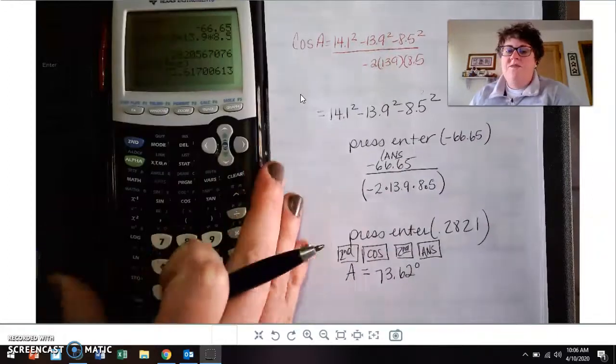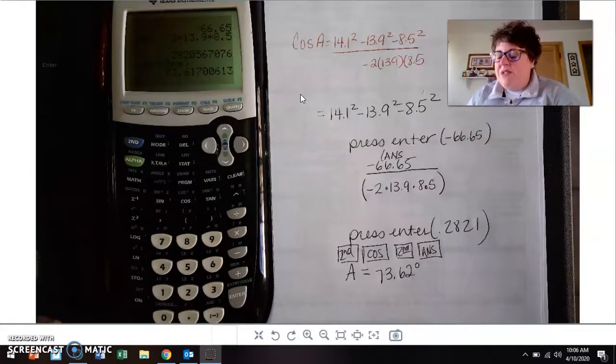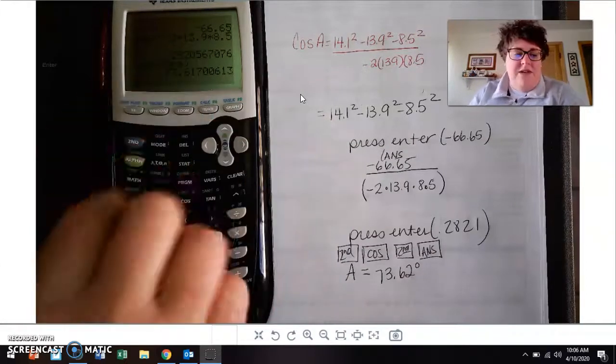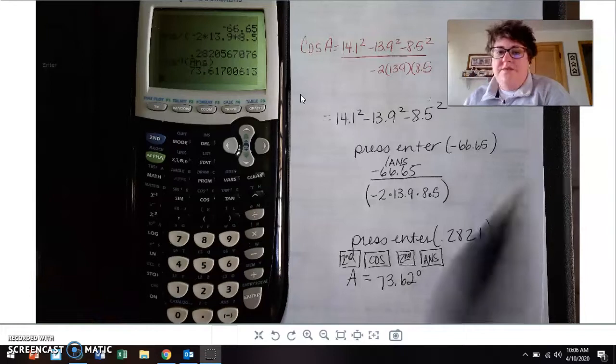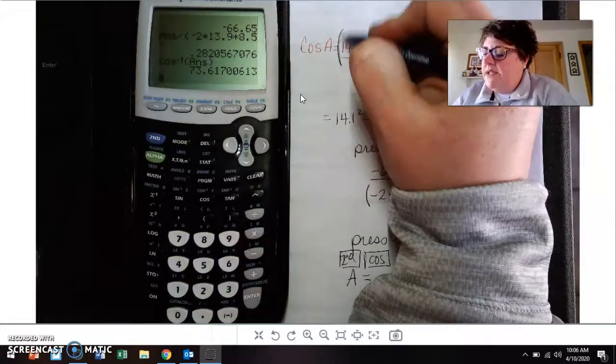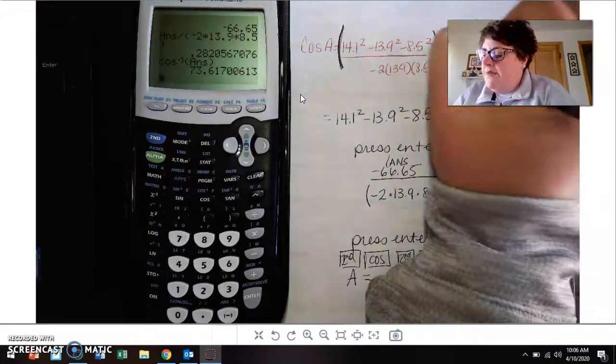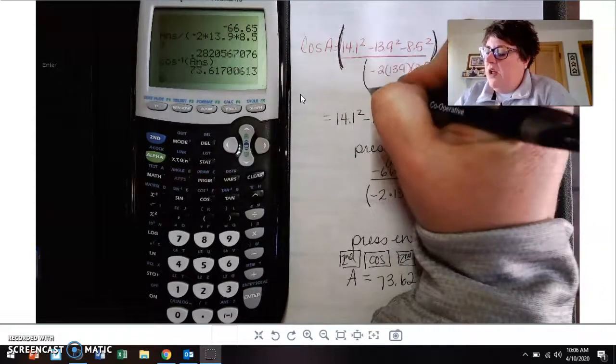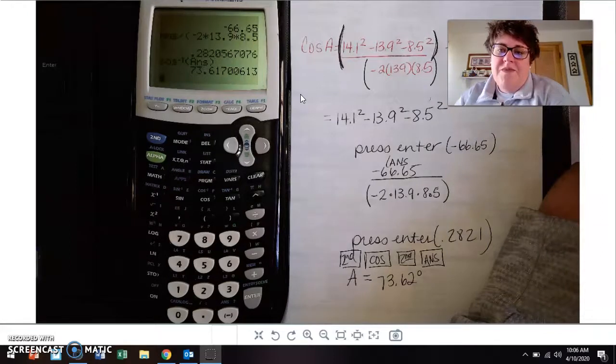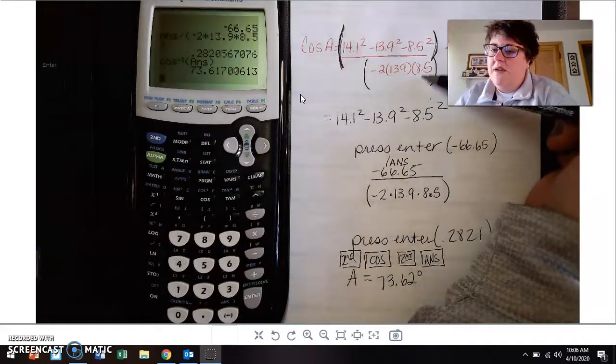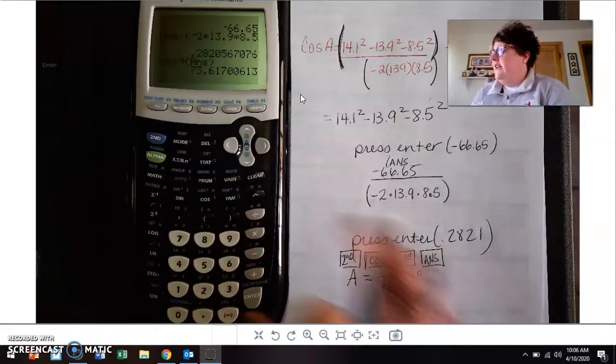So anytime you're finding the angle, cosine of A, cosine B, cosine C, this is how I do it. Now if you are somebody that inputs this into your calculator as you want to do it in the entire thing, what's going to have to happen is you're going to have to put all of the top in parentheses, then press your divide button, and then do all of the bottom in parentheses. So if you're that person that inputs it all together, all of the top in parentheses divided by all of the bottom in parentheses, and then take your inverse.